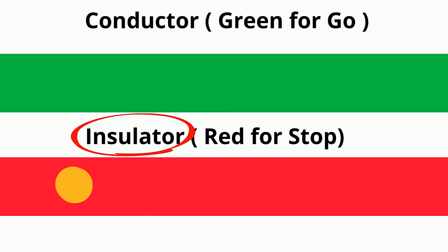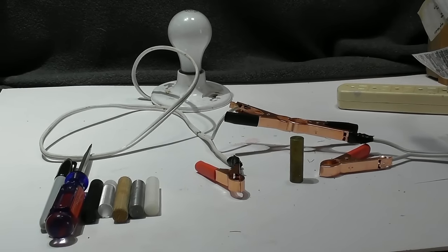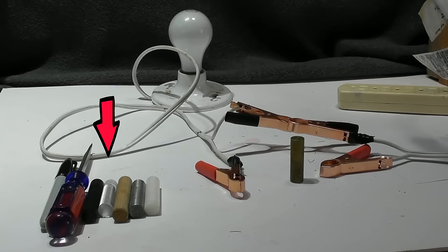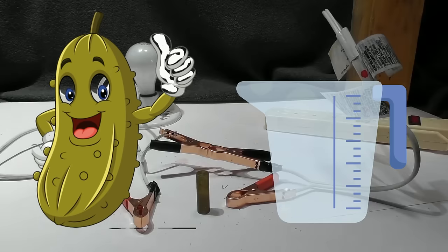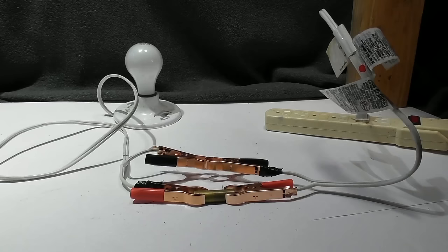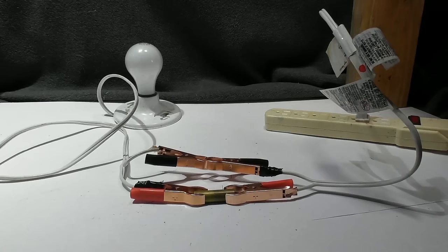What we will do in this video is take a look at some different objects. We have some metals, some plastics, a sharpie, how about a pickle, and some water. We will hook it up to some electricity and see if it is a conductor or an insulator.